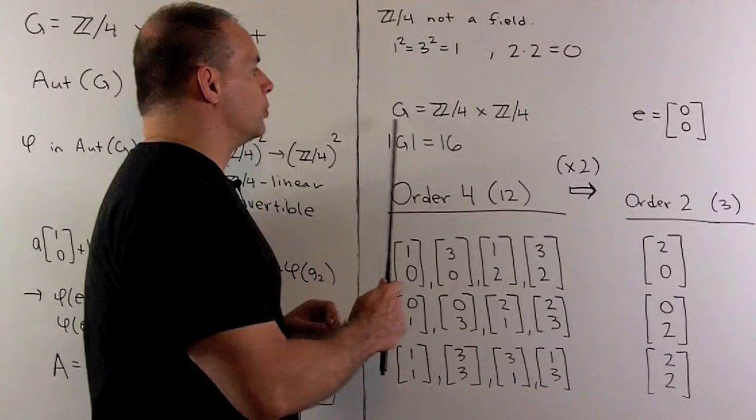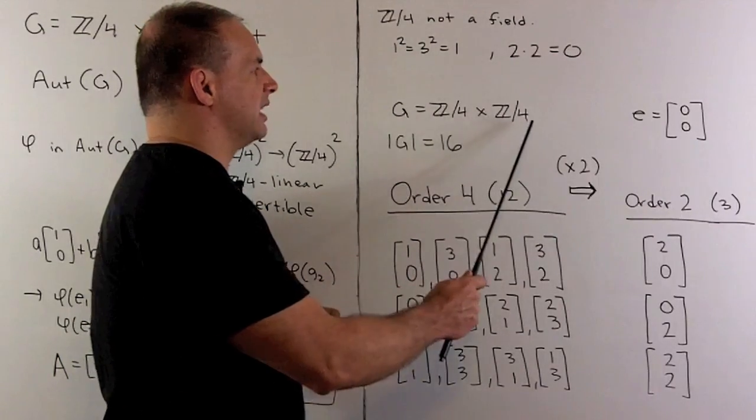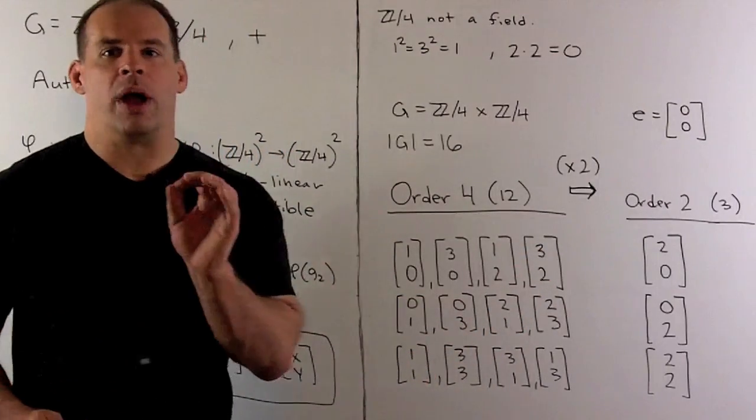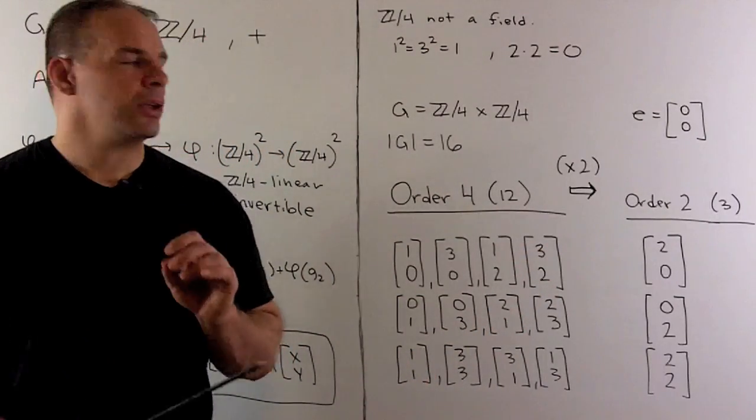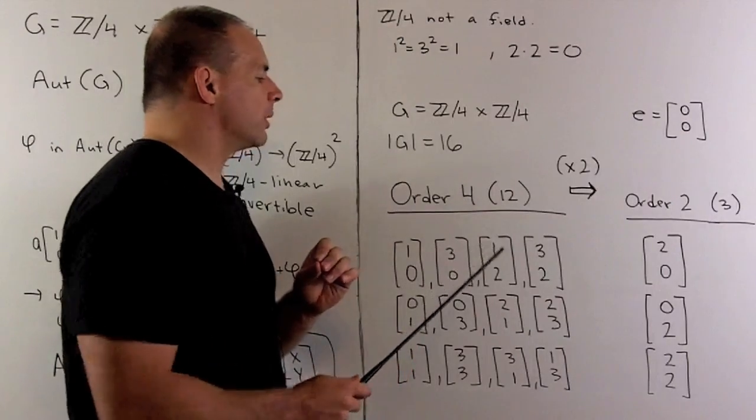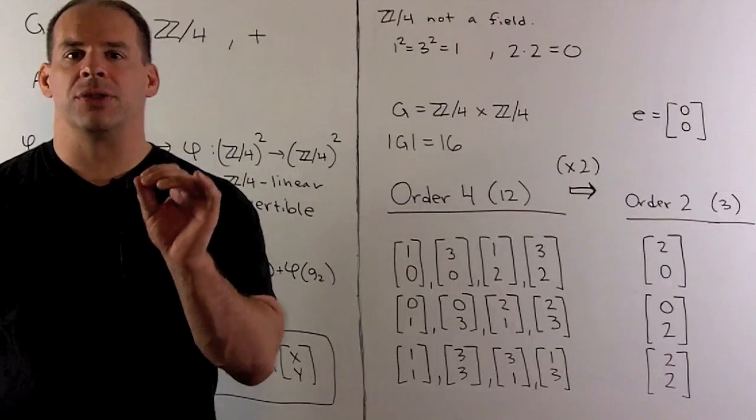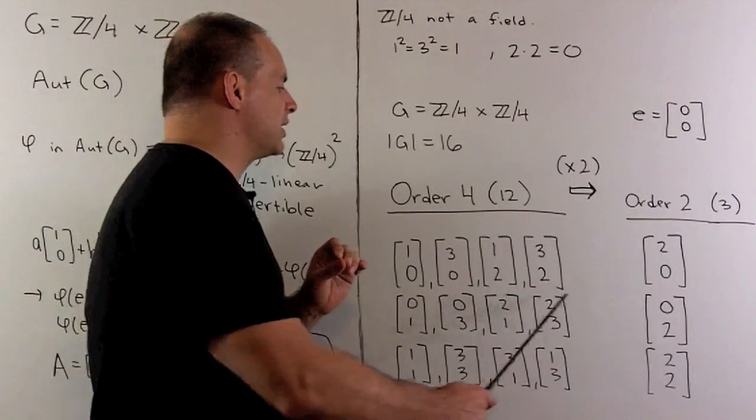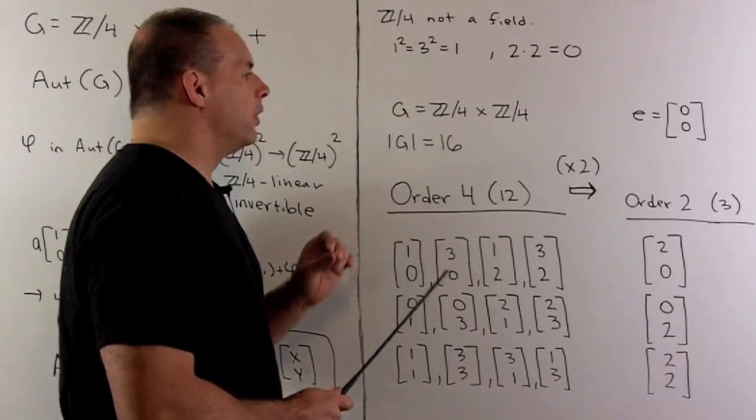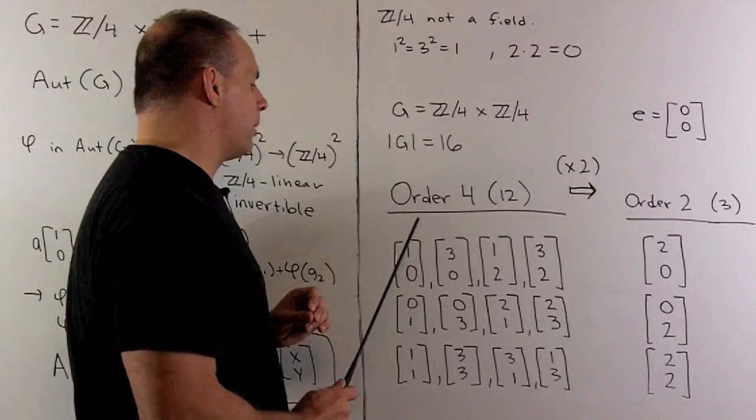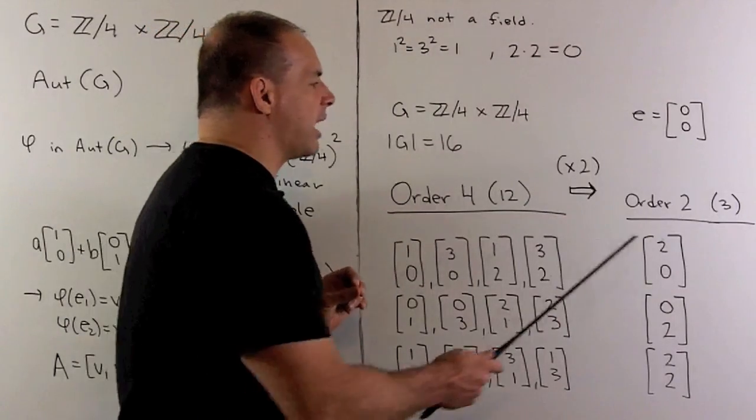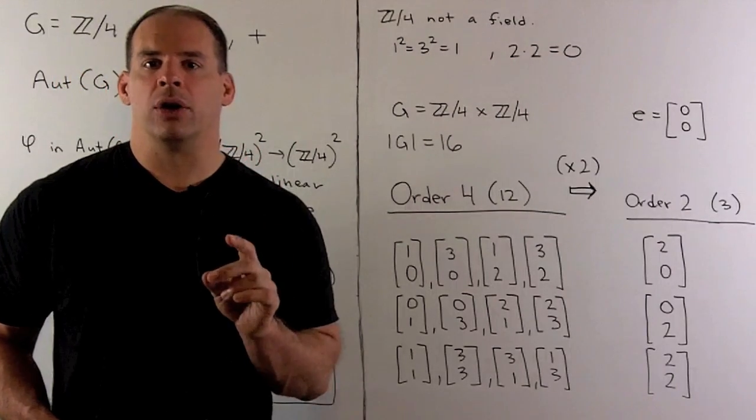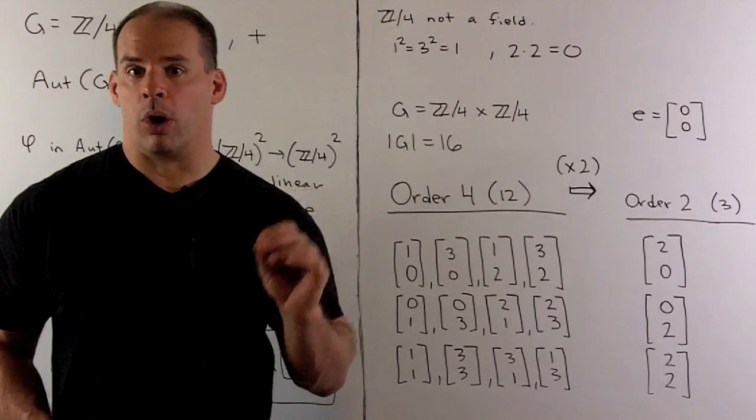Now, in our group G, we'd have 16 elements. We'll have the identity element 0,0. Then, for the elements of order 4, we have 12 of those. So, we can partition them into 3 groups. The idea is going to be, we're going to put the elements together if, when we multiply by 2, or we add each element back to itself, we get the same element of order 2.